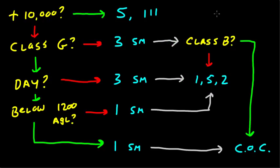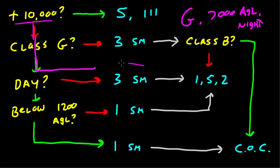Let's pick a harder one. Let's say you're in class golf, and you happen to be at 7,000 AGL. And it's the night time. Are you above 10,000? Well, no. Are you in class golf? Yes. Is it the day time? Well, no. Alright. 3 miles. And 1,52 again. That was, again, pretty easy.